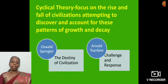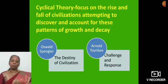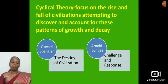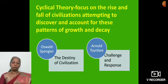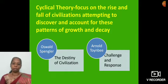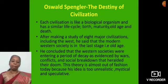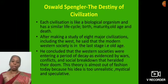Oswald Spengler — The Destiny of Civilization. Each civilization is like a biological organism and has a similar life cycle: birth, maturity, old age, and death. After making a study of eight major civilizations including the West, he said that modern Western society is in the last stage, i.e. old age. He concluded that Western societies were entering a period of decay, as evidenced by wars, conflicts, and social breakdown — that heralded their doom. This theory is almost out of fashion today because his idea is too unrealistic, mystical, and speculative.